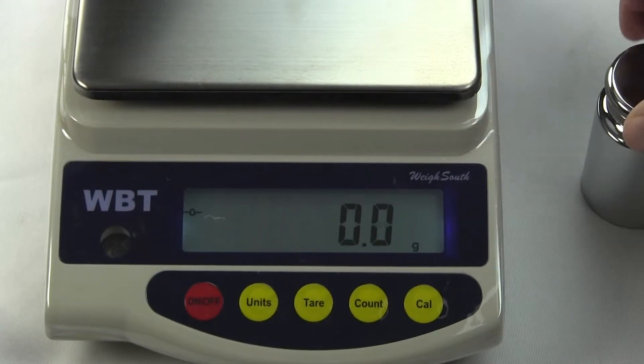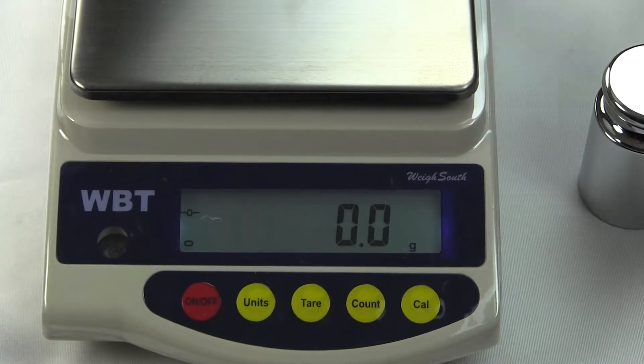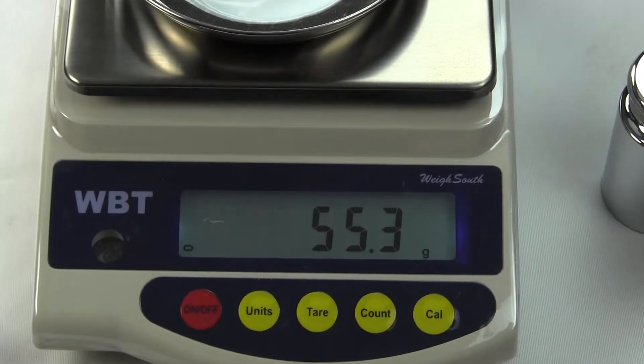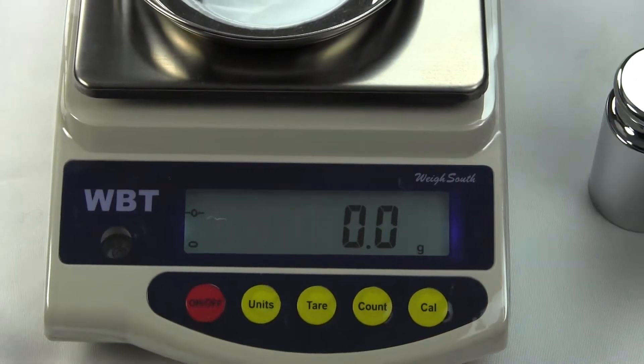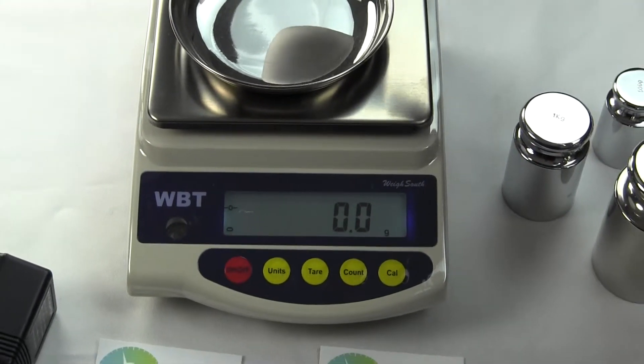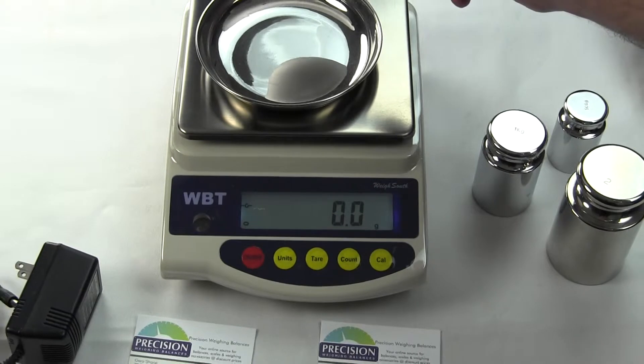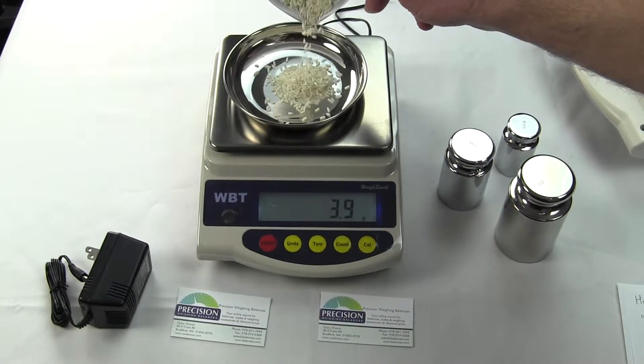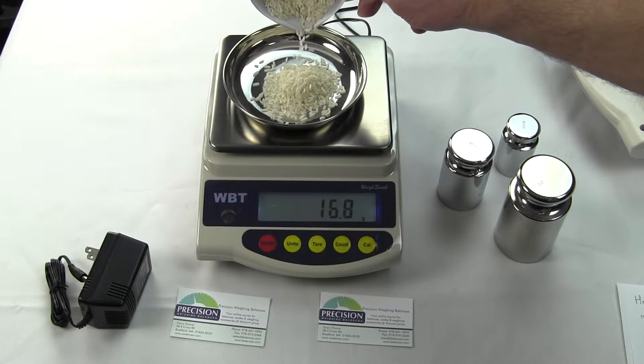The scale is very basic. We have a tare feature so we can put on a weighing pan like such. There's a tare button, so we could tare it out. If we wanted to add, say here's some rice, we want to weigh some rice, we can determine just the weight of the rice because we've tared out that container.